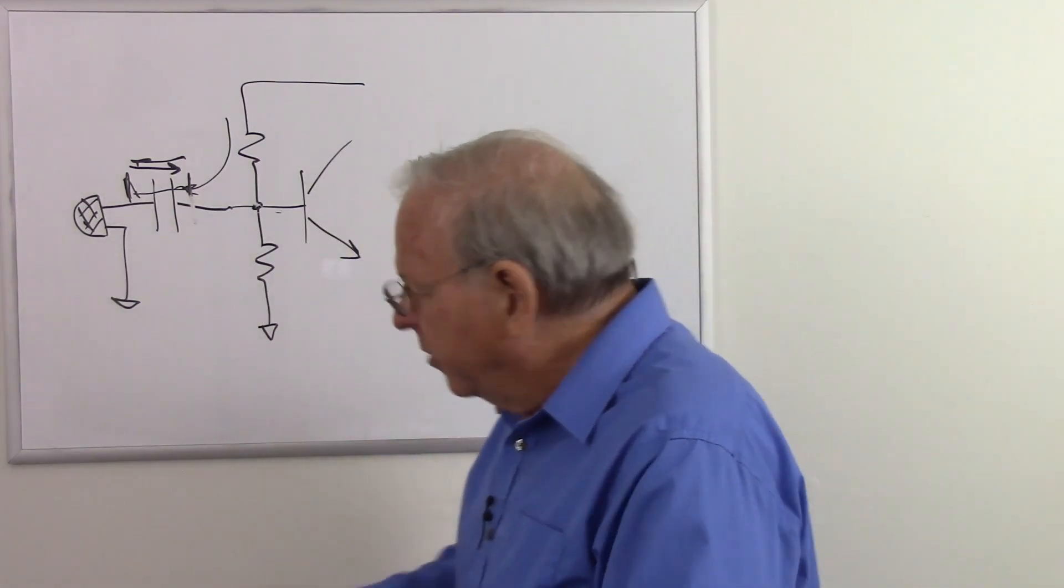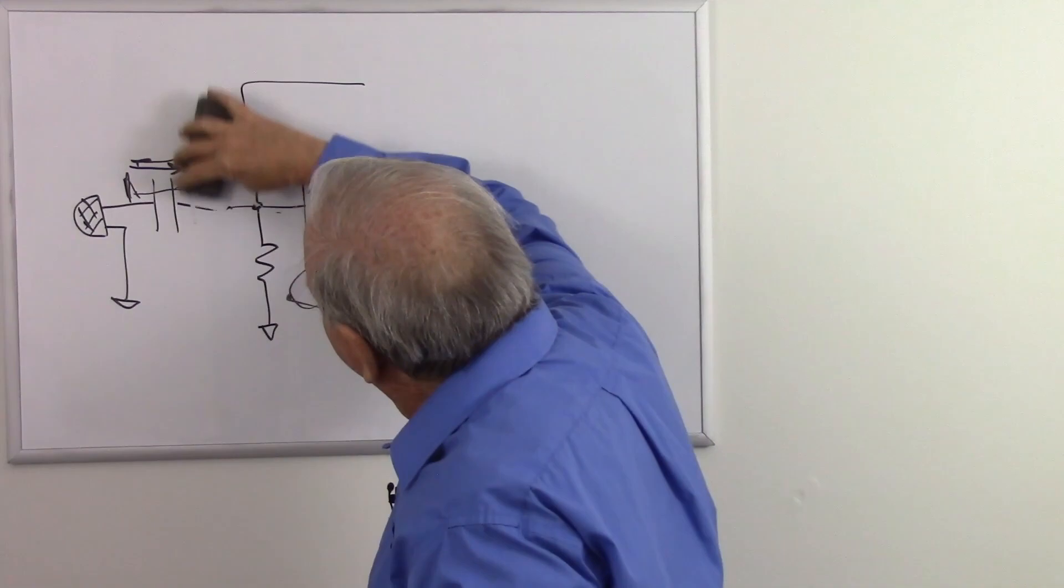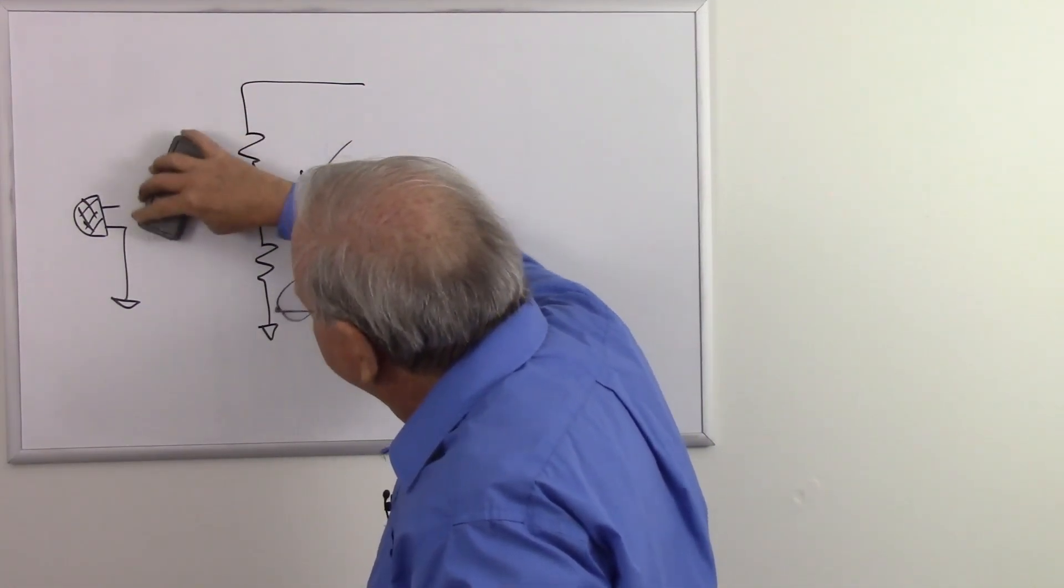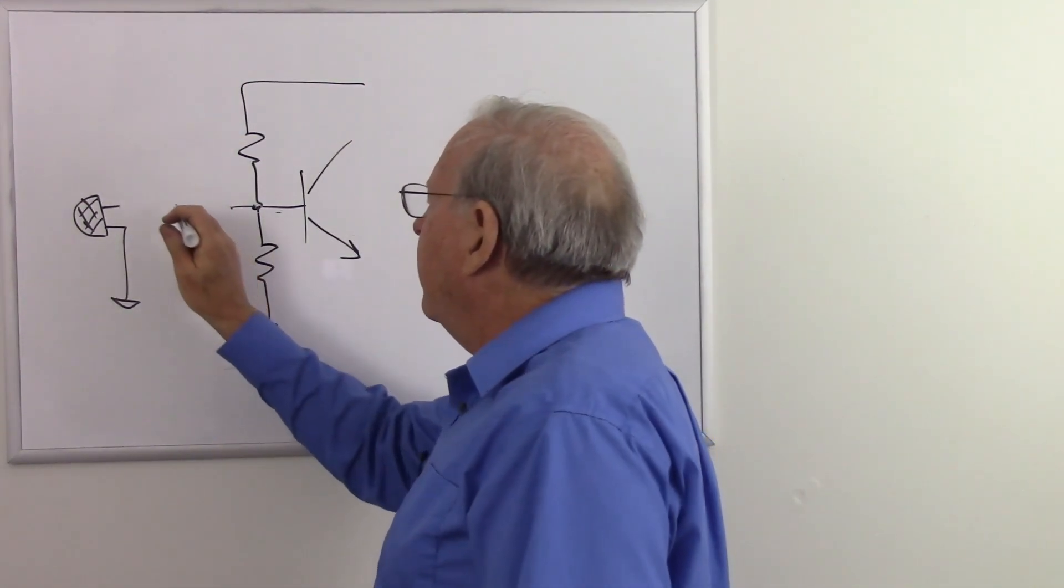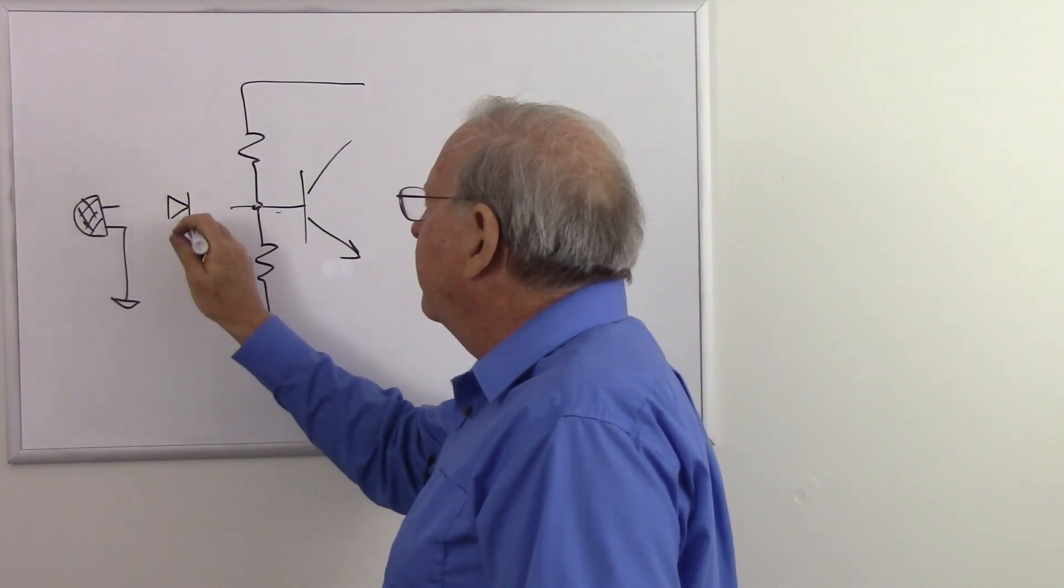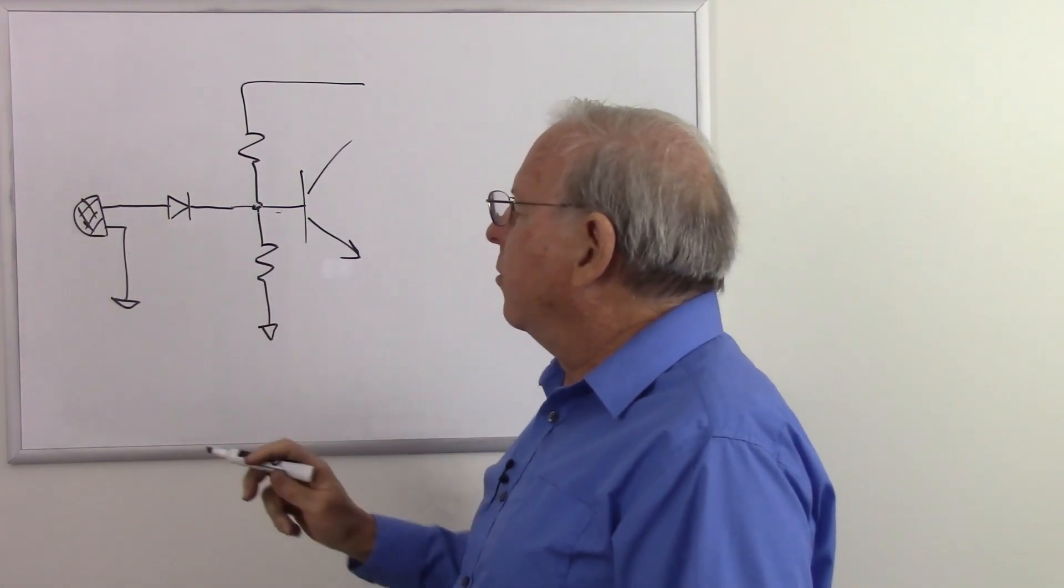So the question is, why don't we just put a diode here instead? That'll block the DC from going to the microphone, won't it?